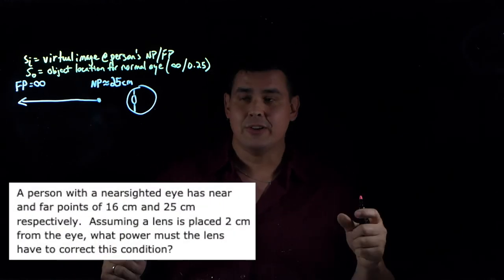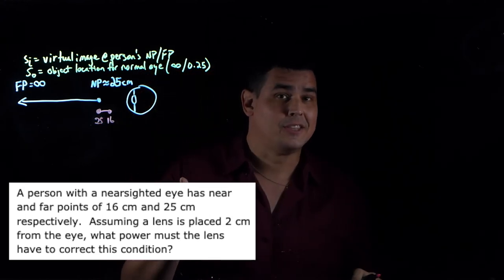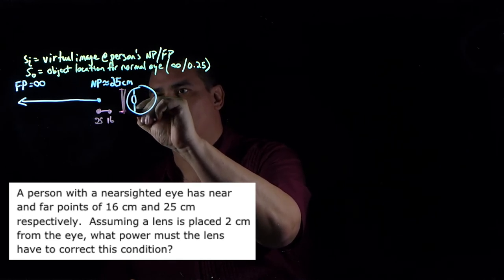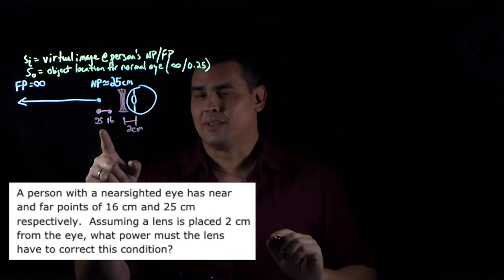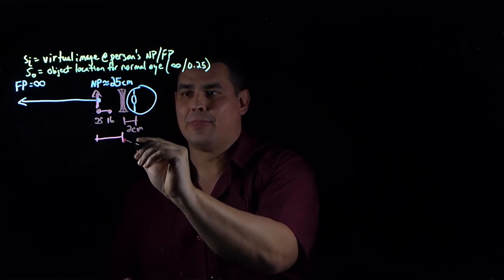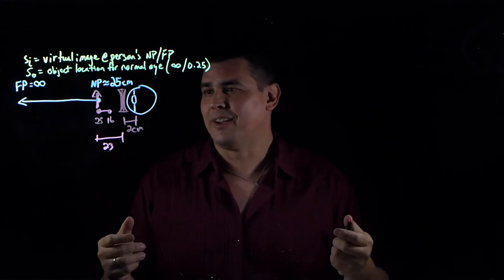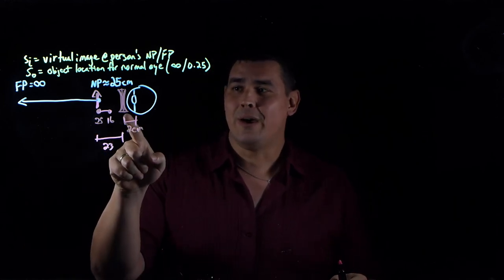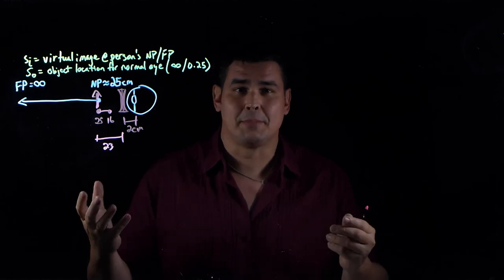The fifth problem adds a complication: the person can see between 16 and 25 centimeters, and the lens sits 2 centimeters off the eye. This means the image distance from the lens to the far point is not 25 centimeters — it's 23 centimeters, because 25 is the distance to the eye and the glasses sit 2 centimeters off. If you become an optometrist, you can't just measure from the eye — you must account for how far the glasses sit off the eye.